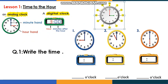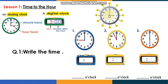Skip count by 5 to read the minutes, and there are 5 minutes between every two numbers. Let's read the minutes together: 5, 10, 15, 20, 25, 30, 35, 40, 45, 50, 55, and finally 60. I'll keep the clock here because it will help us read the time.